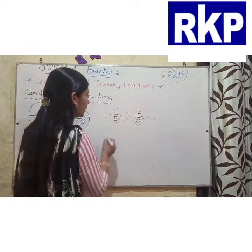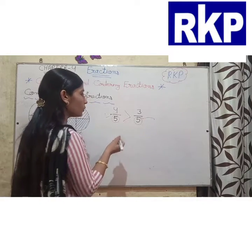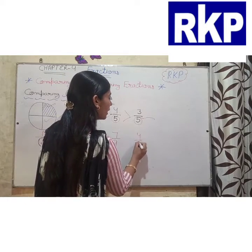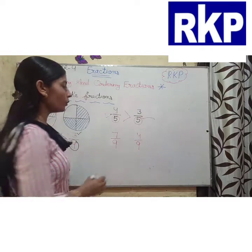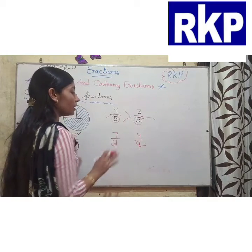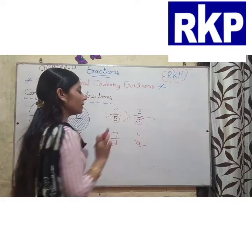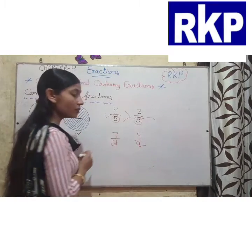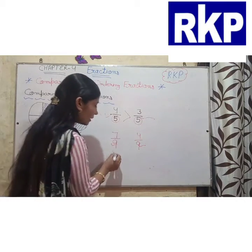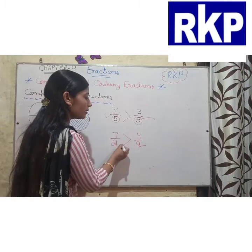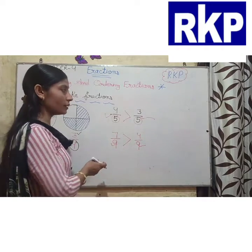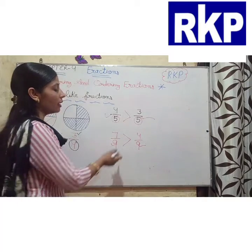If we take one more example — suppose we have two fractions: 7 by 9 and 4 by 9. Here also we can see that denominators are the same. So we need to check only numerators. The numerator is 7 here and 4 here, so we can see that 7 by 9 is greater than 4 by 9. I hope you all have understood how we can compare like fractions.